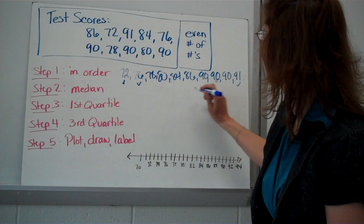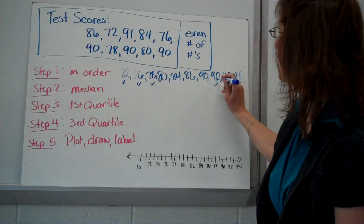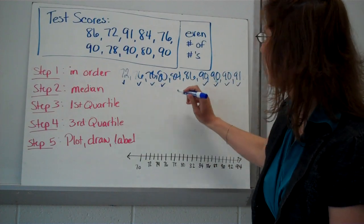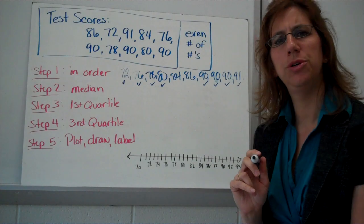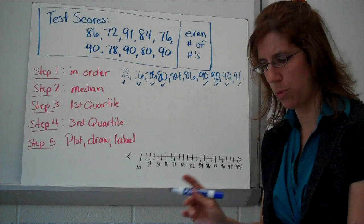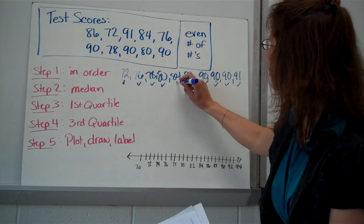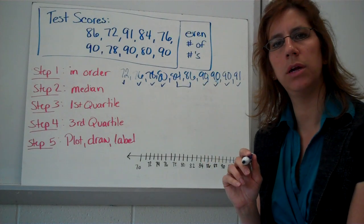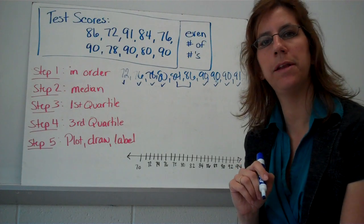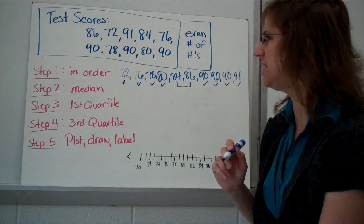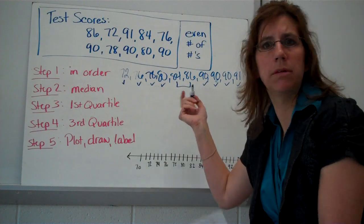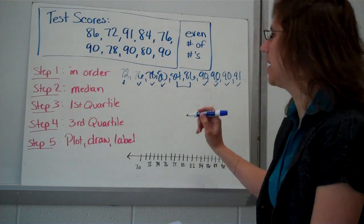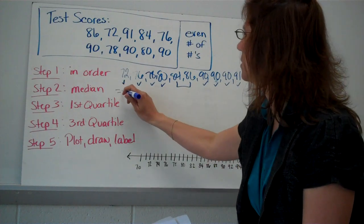Median number. Find the median number. Working my way towards the middle. Oh, there's two in the middle. Do you remember how to find the median when there's two in the middle? You're going to take these two, add them up, and divide by two. 84 plus 86, and then divide by two. Now, this is kind of an easy one. There's only one number in between 84 and 86. That is your median. So, the median is 85.